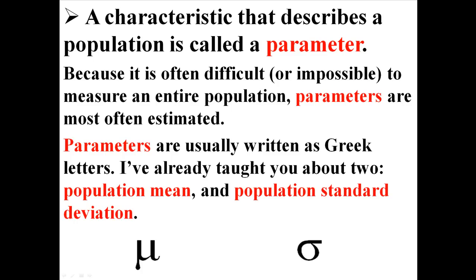Parameters are usually written as Greek letters. I've already taught you about two, the population mean and the population standard deviation. These are represented by the Greek letters mu and sigma.